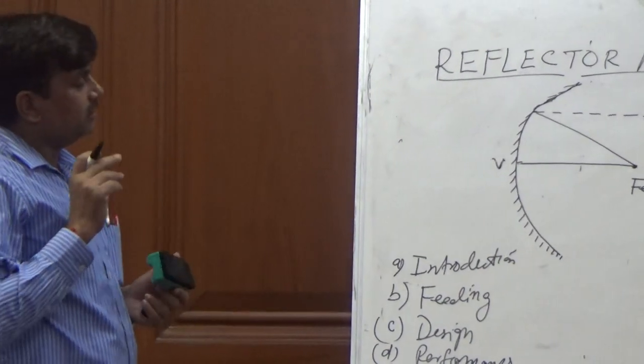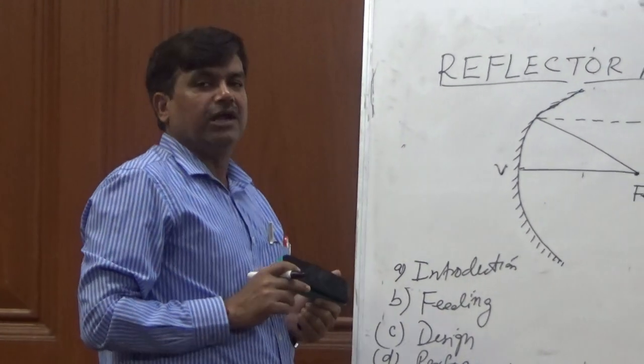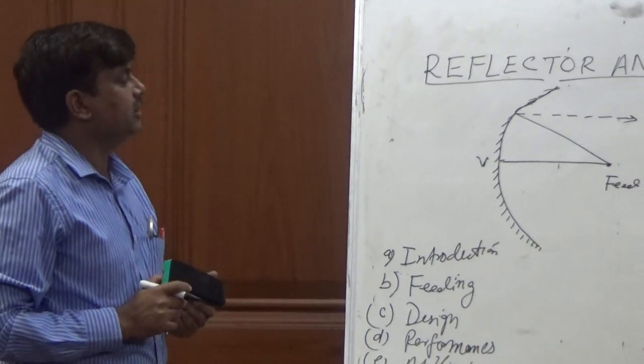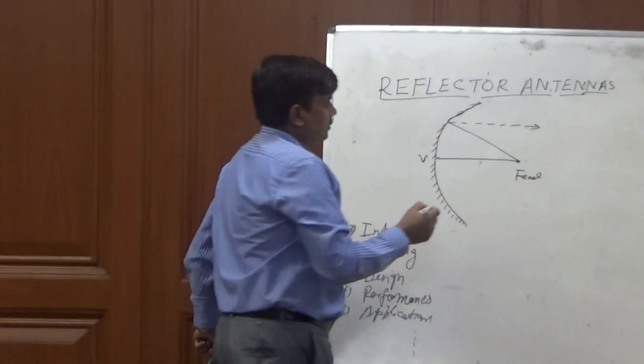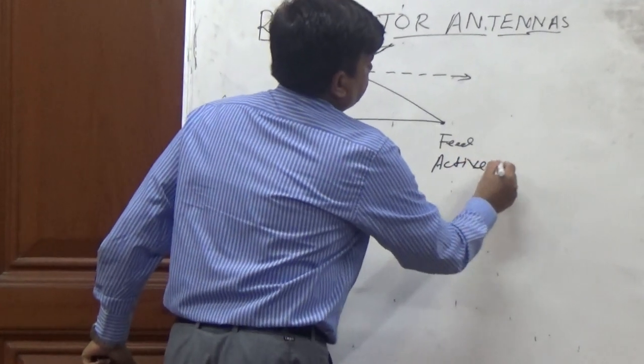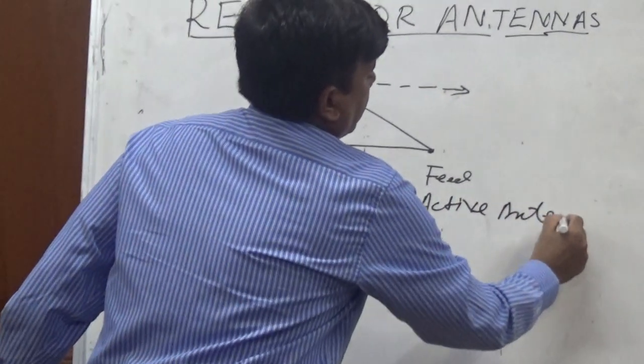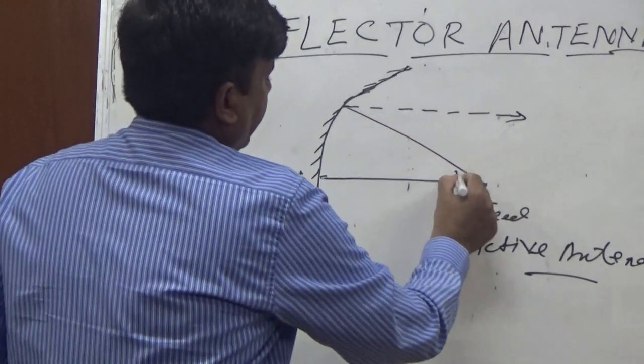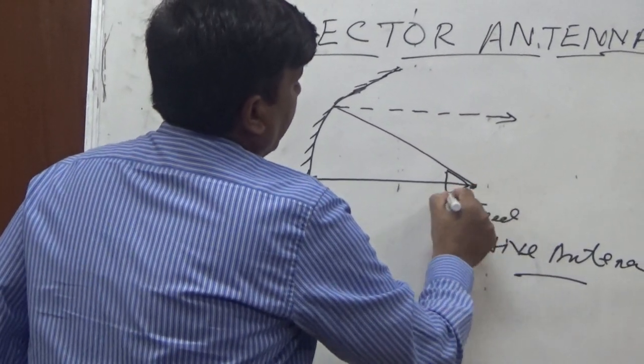Because this antenna which is used for the feeding is the only main component, that is why this feeding antenna is also called active antenna. So this active antenna has an element, we take horn antenna.